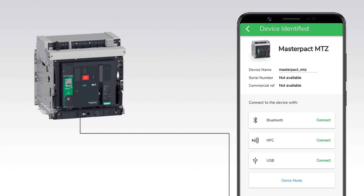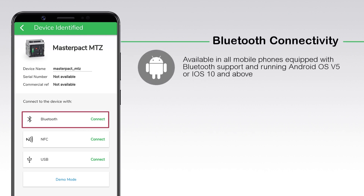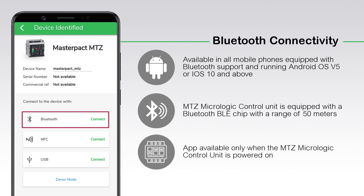Once you have logged into the app, you have an option to connect to the device by using either Bluetooth, NFC, or USB. The Bluetooth feature is available in all mobile phones equipped with Bluetooth support and running Android OS version 5 or iOS 10 and above. The MTZ Micrologic Control Unit is equipped with a Bluetooth BLE chip with a range of 50 meters, which allows it to communicate with the MasterPACT MTZ App. The app as Local HMI over Bluetooth is available only when the MTZ Micrologic Control Unit is powered on.